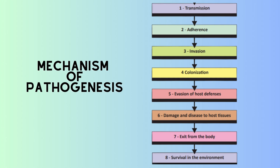The sixth point refers to the severity of the infectious disease. The seventh is exit from the body, also known as the releasing step — the release of the pathogen to infect new cells. The eighth is survival in the environment — how bacteria can survive outside the host. These are the eight steps involved in the mechanism of pathogenesis.